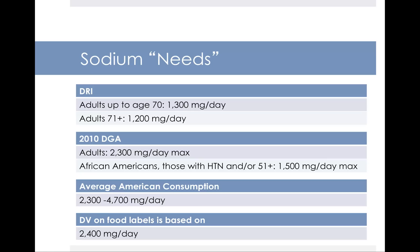In 2010, the Dietary Guidelines for Americans said adults should have a maximum of 2,300 milligrams of sodium per day — with one exception. Three groups should reduce sodium to as low as 1,500 milligrams per day: African Americans, those who have hypertension, and anyone age 51 or older. This also includes people with diabetes and kidney disease. Think about where you fall — those three groups make up about half the United States population. Everyone else should aim for no more than 2,300 milligrams a day.